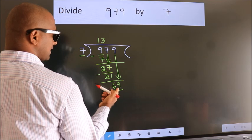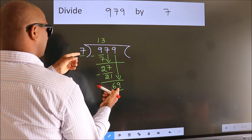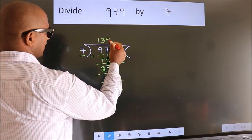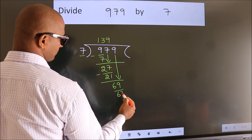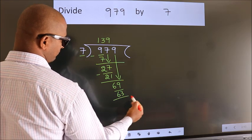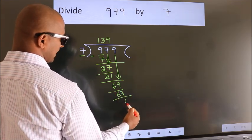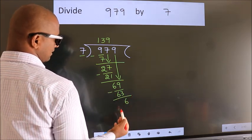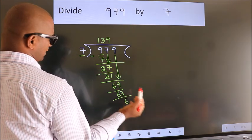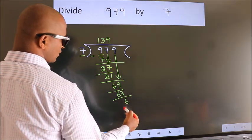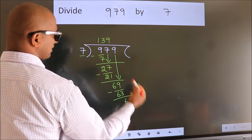A number close to 69 in the 7 times table is 7 nines, which is 63. Now we subtract and we get 6. There are no more numbers to bring down, so we stop here. This is our remainder.